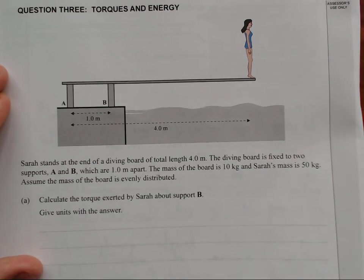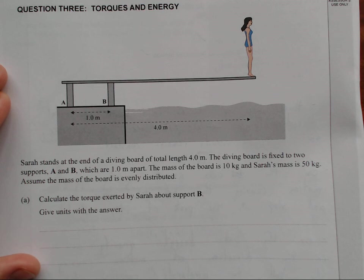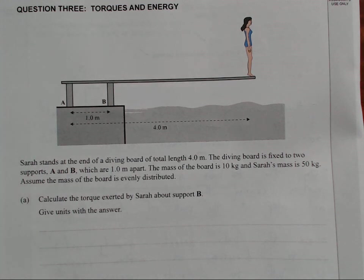Question 3. Sarah stands at the end of a diving board of a total length of 4 meters. The diving board is fixed to two supports A and B which are 1 meter apart. The mass of the board is 10 kg. Sarah's mass is 50 kg. Assume the mass of the board is evenly distributed.